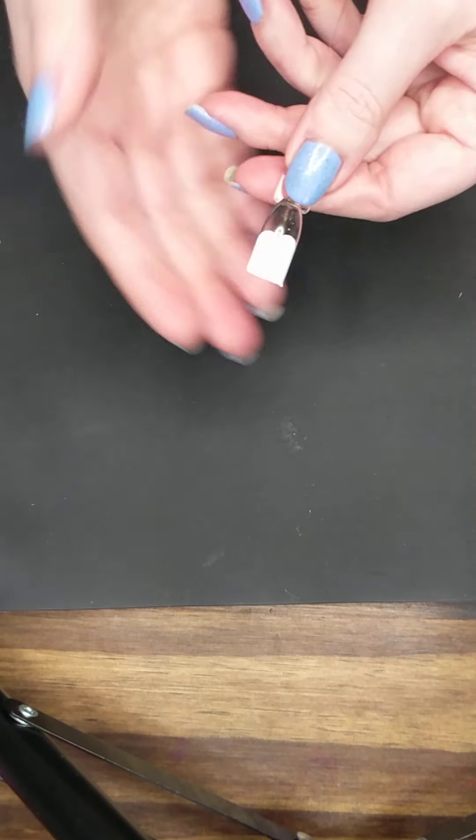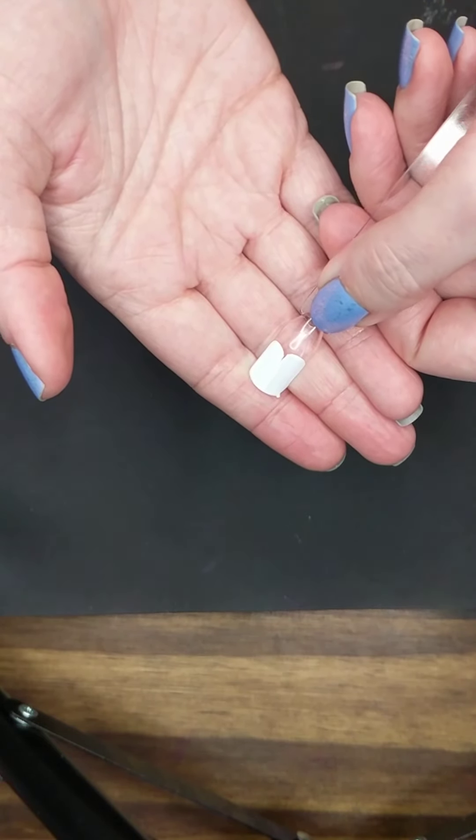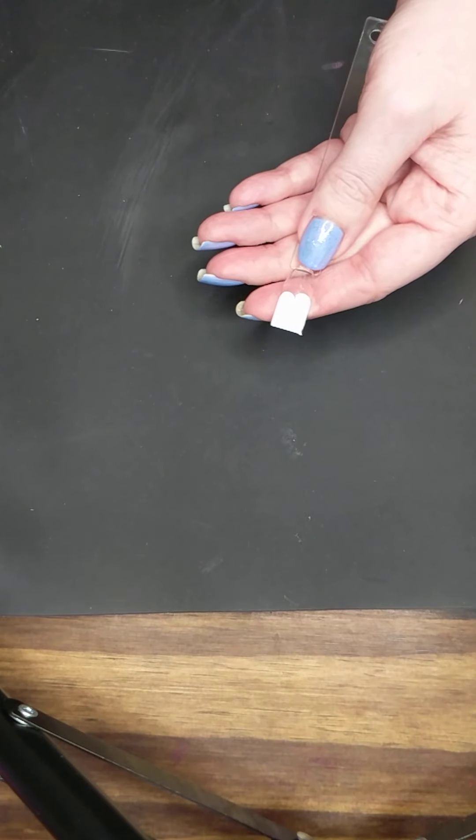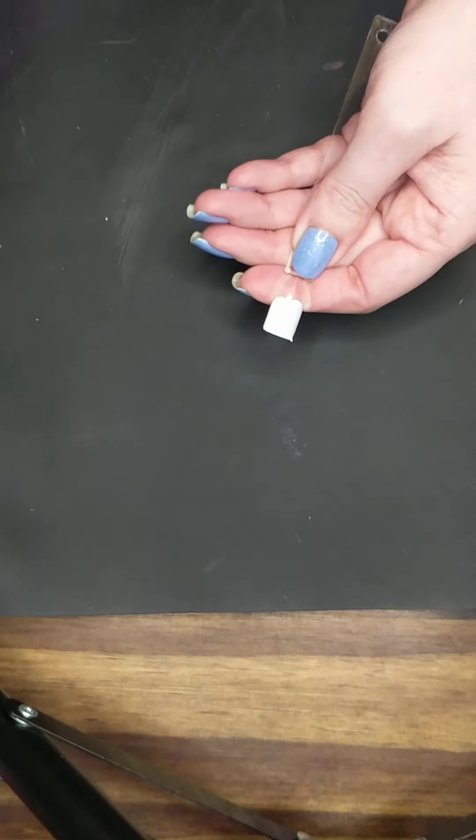And so you can see when you do that, it almost looks like the top of a heart up on top, right? You're going to probably need to do at least two coats depending on whatever polish that you're using, just to make sure that it's not streaky.